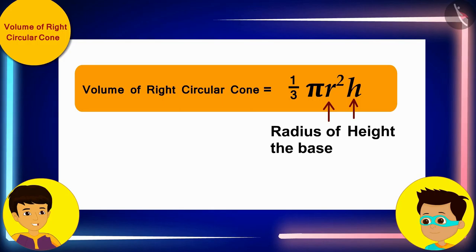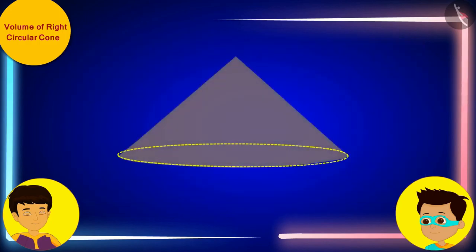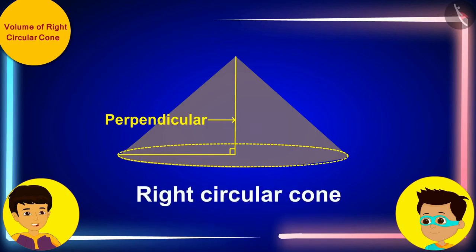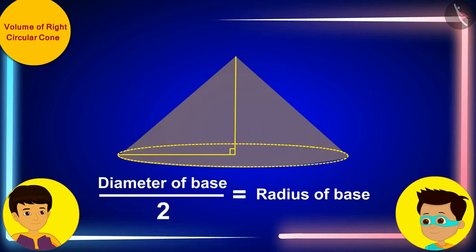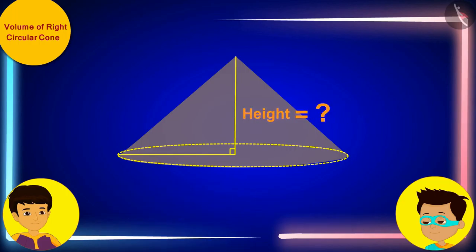But, Thomas, this is a difficult one. We can see that the height of this sand pile is perpendicular to its base. So, it is a right circular cone. And we can also find the radius of its base by measuring the diameter of its base. But we cannot measure its height. So, how can we find its volume?